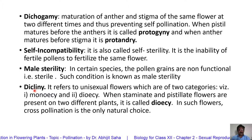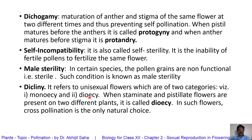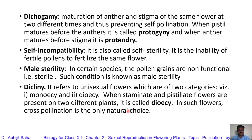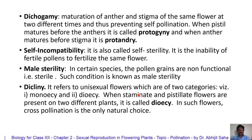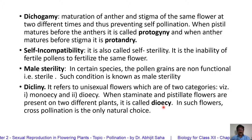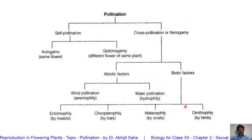Another term is dioecy — that is, unisexual flowers. Monoecious and dioecious — you are already aware of these two terms. Dioecious means when staminate and pistillate flowers are present on two different plants. When the staminate and pistillate flowers are unisexual and borne on two different plants, the plant must opt for cross-pollination. For such plants, cross-pollination is the only choice.